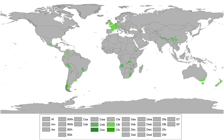Poleward of the latter is a zone of the aforementioned subpolar oceanic climate, Köppen CFC, with long but relatively mild for their latitude winters and cool and short summers, average temperatures of at least 10 degrees Celsius for 1 to 3 months. Examples of this climate include parts of coastal Iceland in the Northern Hemisphere and extreme southern Chile and Argentina in the Southern Hemisphere, including Ushuaia and Punta Arenas.